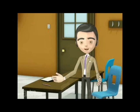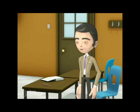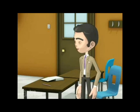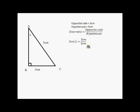Basically, SOHCAHTOA is used in only right-angled triangles. SOH is the most common phrase for the sine ratio. Here's an example why. For X, SOH stands for sine equals opposite over hypotenuse. Because we have the opposite and the hypotenuse, we take the inverse sine of 3 over 5 to find angle X. This comes out to a total of 37 degrees.